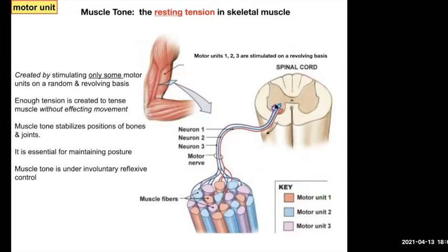You have these three motor units — purple, blue, and red — innervating a certain number of muscle fibers. Number one goes, and then somewhere before it fully contracts, the next one goes, and then before that one contracts, the next one goes. So they cycle through: one, two, three, one, two, three, in whatever sequence.